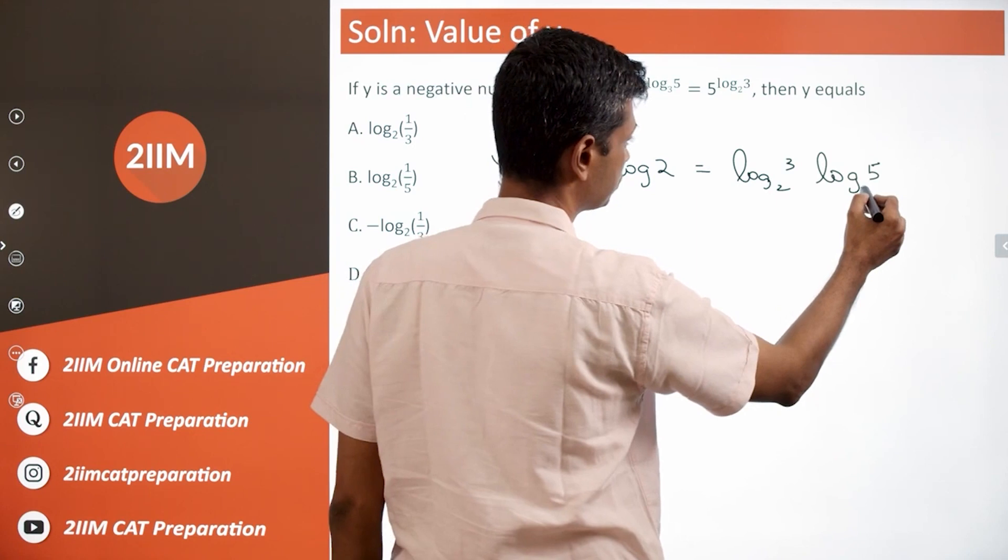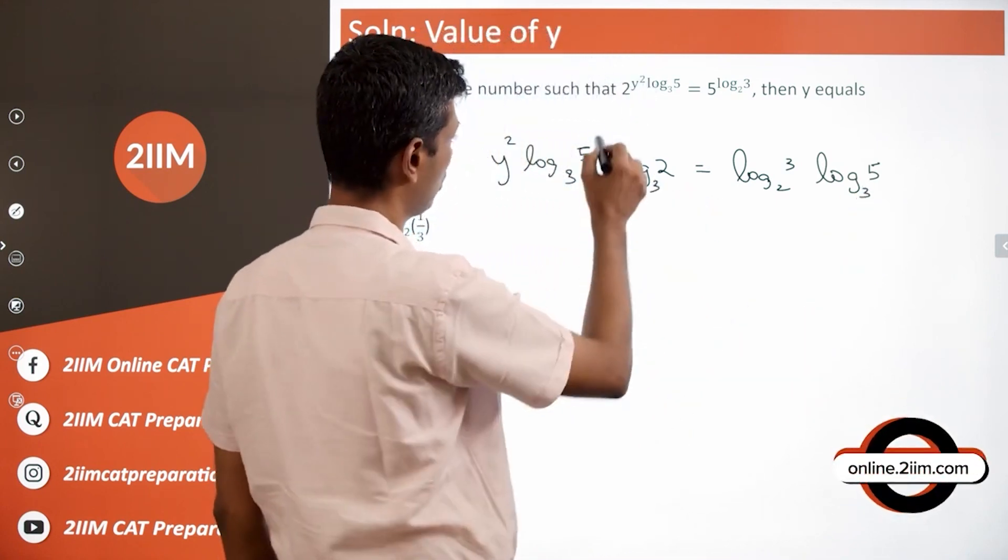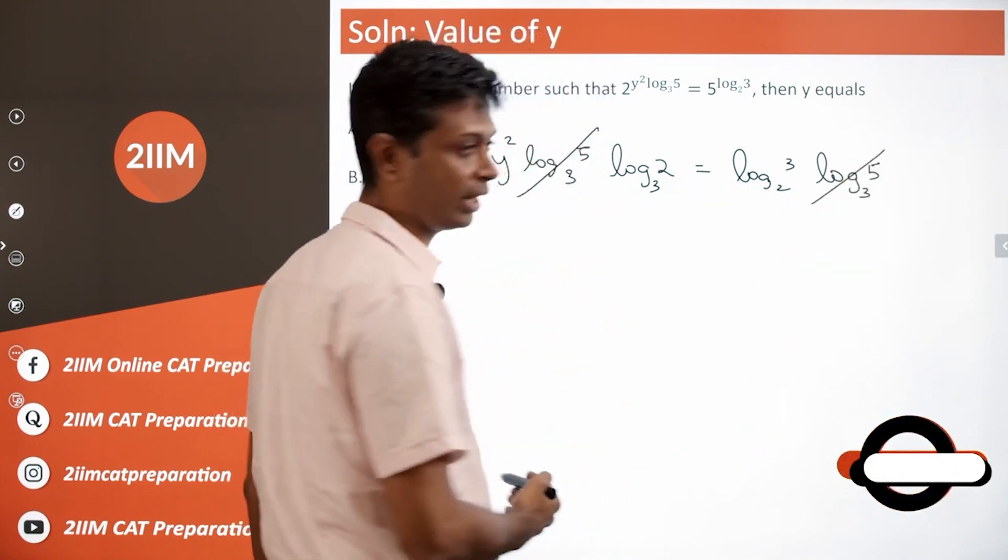We can choose the base to be 3. In our hands, we can choose any base. If we do that, then this log 5 to the base 3, this log 5 to the base 3, these 2 get cancelled.